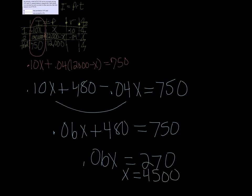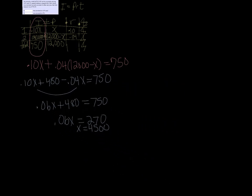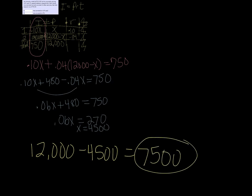So what that means is in one account she put $4500. In the other one, well, the other one would have been $12,000 minus $4500, which is $7500. So one account had $7500, the other one $4500.